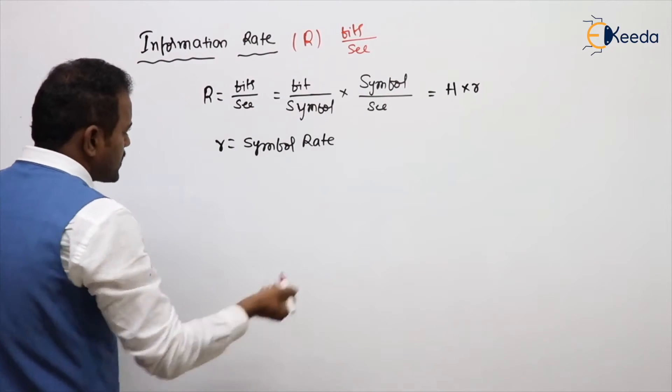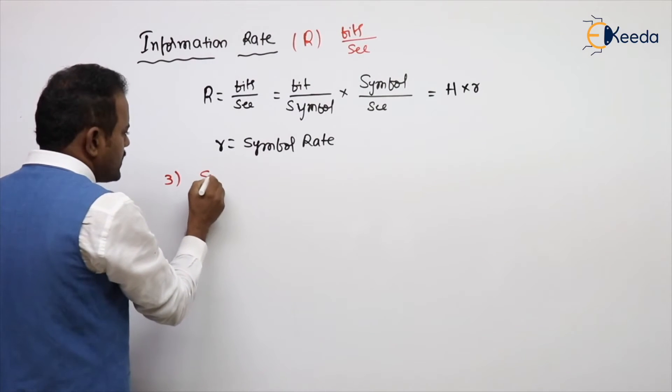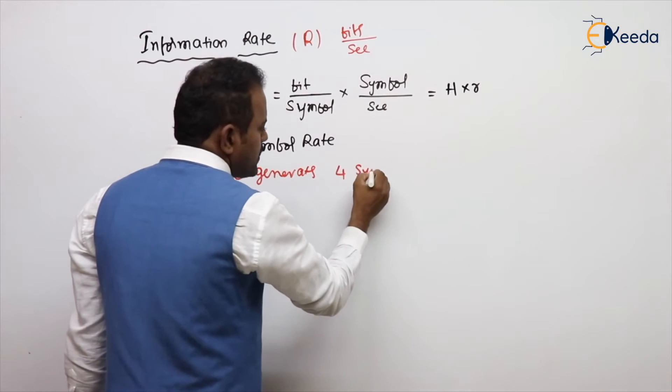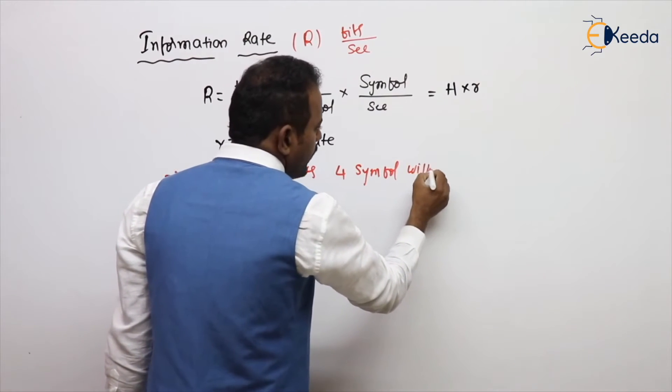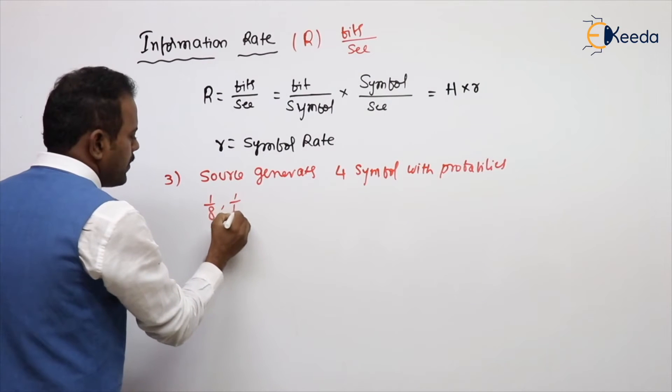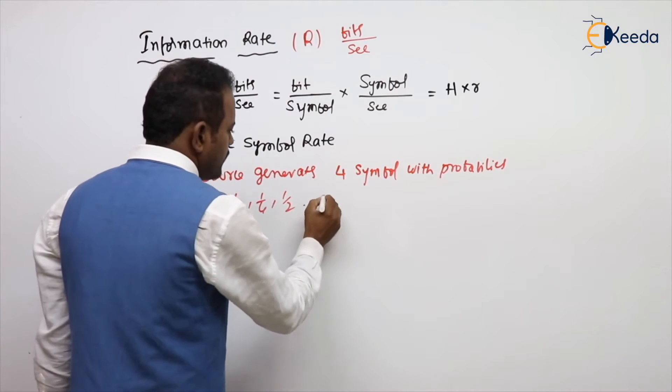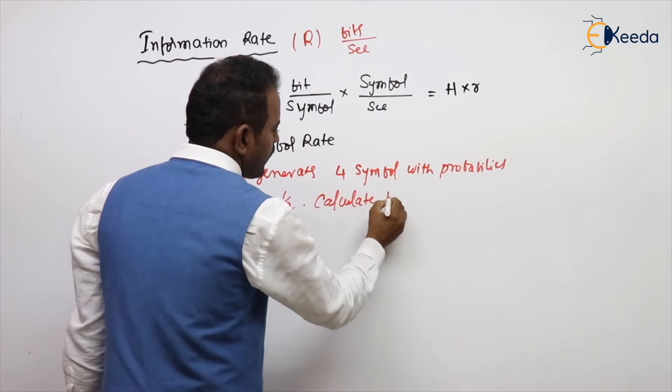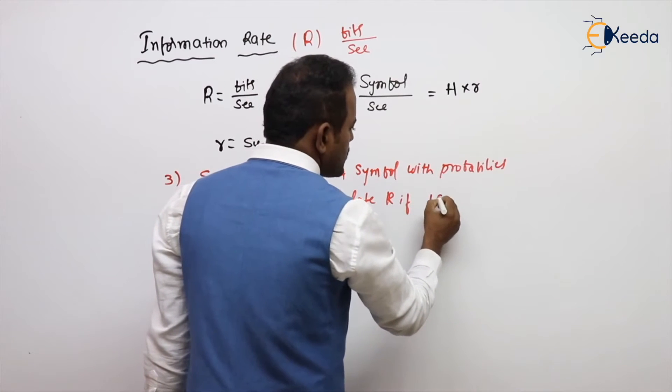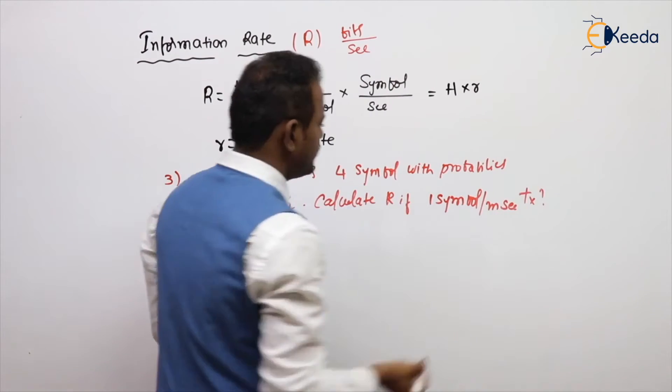Let's take one simple example. For example, a source generates four symbols with probabilities 1/8, 1/8, 1/4, 1/2. Calculate R if one symbol per millisecond transmitted. That is the problem.